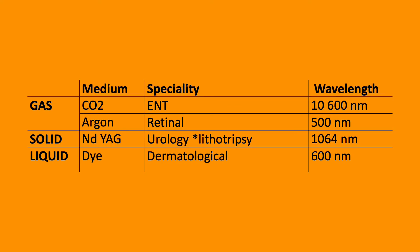Lasers are normally named according to the type of laser medium. There could be a gas, a solid or a liquid. Gas could be CO2 or argon and they have specific uses and the medium relates to the wavelength. For example, CO2 has a wavelength of 10,600 nm.